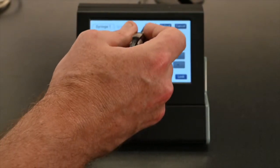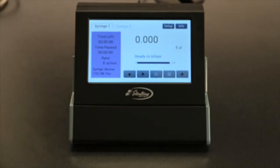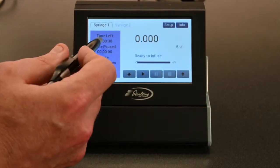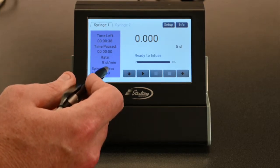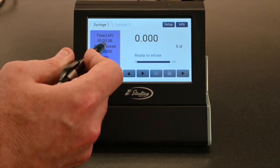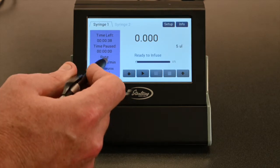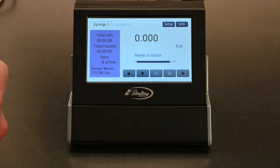Check that everything's OK there. We hit OK. And now we're back to that homepage screen showing what we had programmed. So time left meaning the rate and the volume that we selected gives us an eight microliter per minute infusion rate.